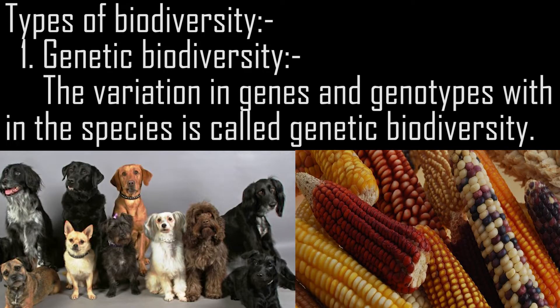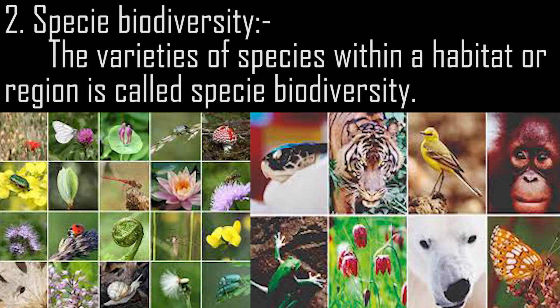Types of biodiversity. 1. Genetic biodiversity: the variation in genes and genotypes within a species is called genetic biodiversity. 2. Species biodiversity: the varieties of species within a habitat or region is called species biodiversity.